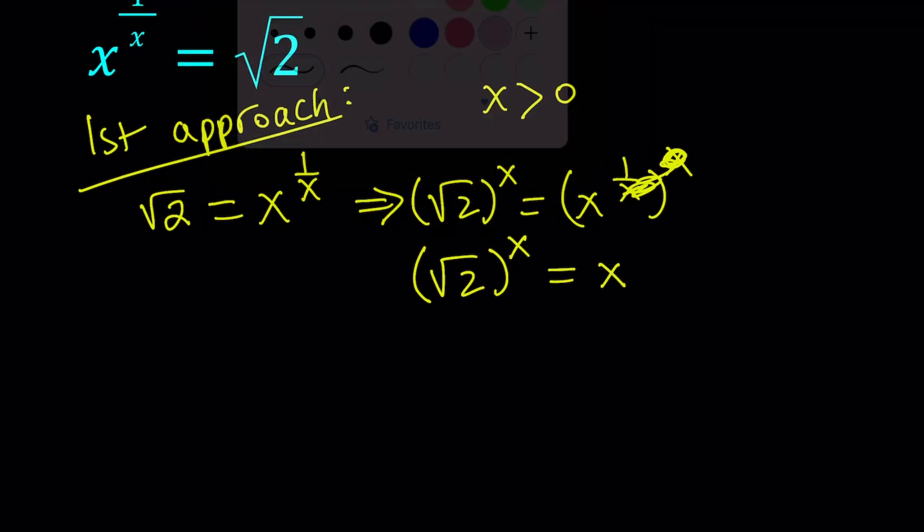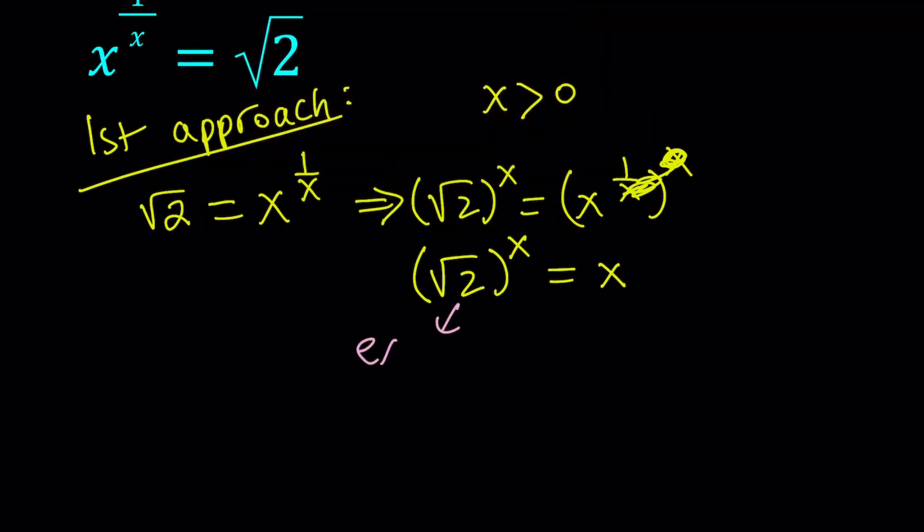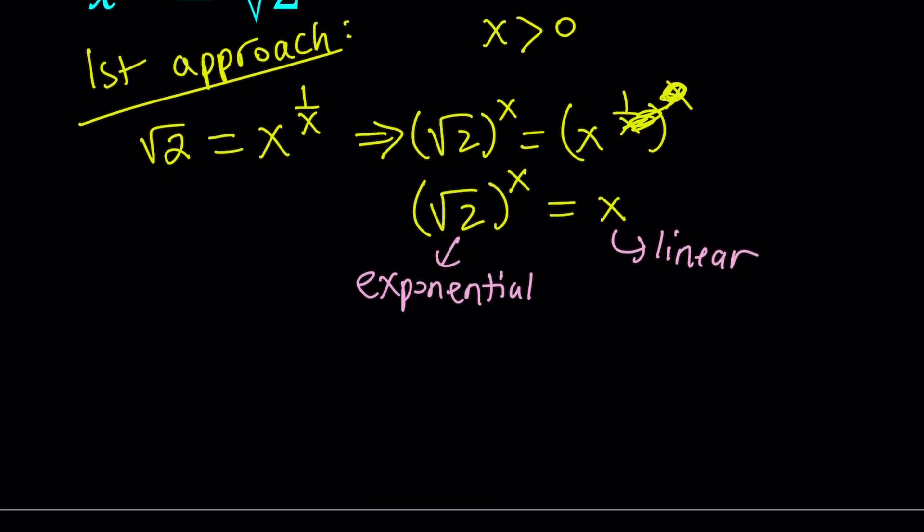Now this is nice because on the left-hand side, we have an exponential equation, and on the right-hand side, we have a linear function, and we want them to intersect and find the intersection point. How many intersection points can they have? Exponential functions are pretty much always concave up. That's my claim, and I will just prove it.